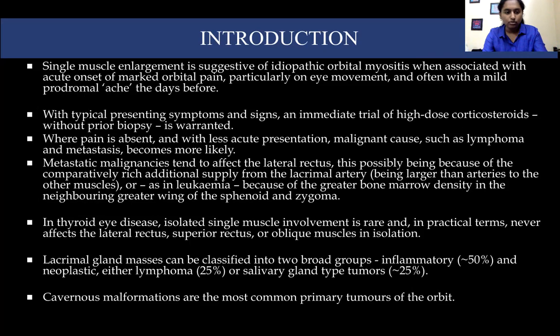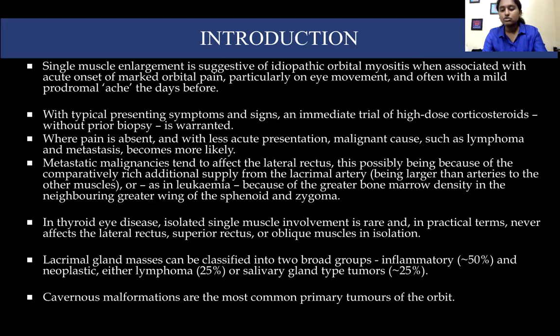In thyroid eye disease, isolated single muscle involvement is rare and in practical terms never affects the lateral rectus, superior rectus, or oblique muscles in isolation. Lacrimal gland masses can be classified into two broad groups: inflammatory and neoplastic, either lymphoma or salivary gland type tumors. Cavernous malformations are the most common primary tumors of the orbit.